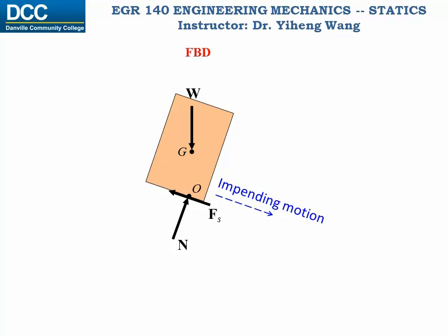Now we have completed the free body diagram, and we need to place it in an appropriate coordinate system. We can set it up the conventional way, but for this particular problem it's better to orient the axes so that both the frictional force Fs and the normal force N are easily specified. We can then write the two resultant force equilibrium equations — since we are not concerned with tipping over, we do not need to write the moment equilibrium equation.